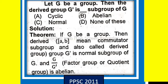The derived group G' is a subgroup of G. By theorem: if G be a group, then the derived group — also called the commutator subgroup — G' is a normal subgroup of G. So option C is correct, that is 'normal'.